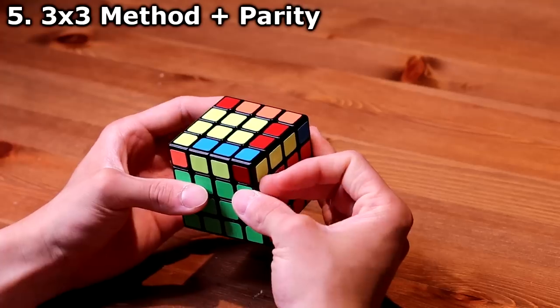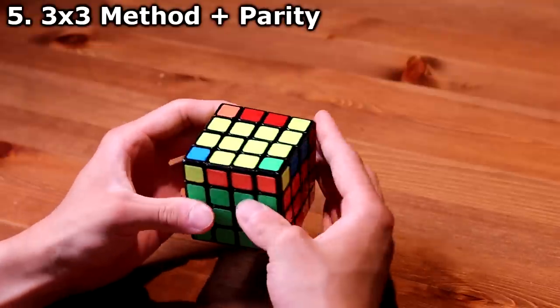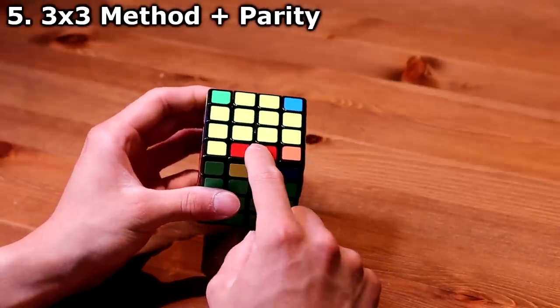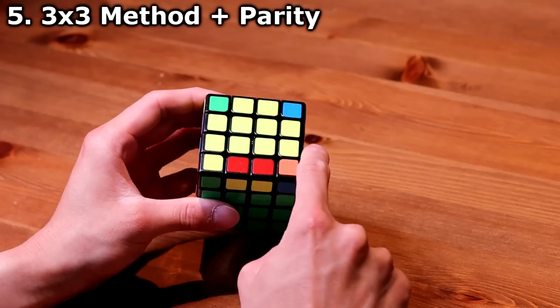One of them is the OLL parity. You could either have one or three yellow edges that are finished. You put this on a front layer, and then with this algorithm, it will flip that edge piece.